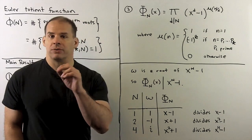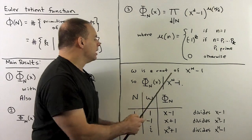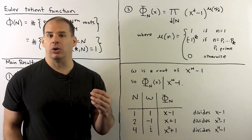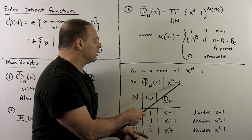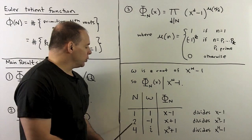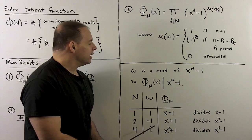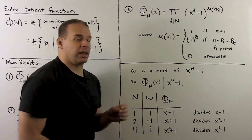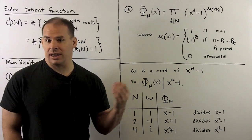We start from scratch. Recall omega is a root of x^n − 1. Because the nth cyclotomic polynomial is the minimal polynomial of omega, it divides x^n − 1. Let's check this with small n. If n = 1, 2, or 4, we have omega = 1, −1, and i. Then φₙ in these cases are x − 1, x + 1, and x² + 1. These all divide the corresponding x^n − 1.